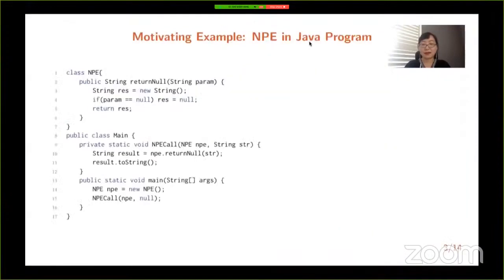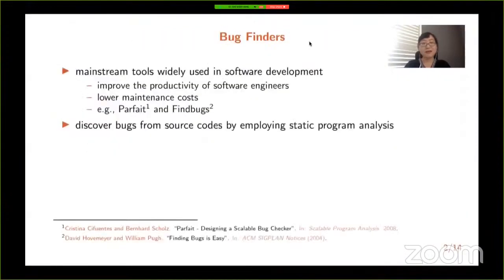As we know, bug finding tools have matured so they are readily used in the software development life cycle both in academia as well as industry. These tools search for software bugs by checking program code using static program analysis techniques without executing the code. They not only improve the productivity of software engineers but also lower the maintenance costs.